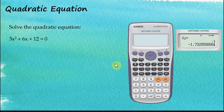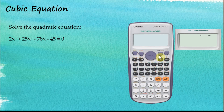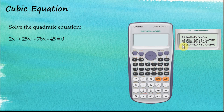Now let's solve a cubic equation using the calculator. The equation is 2x cubed plus 25x squared minus 78x minus 45 equals zero. Go to Mode, then Equation, and select number 4 for cubic equations. The calculator will ask for coefficients a, b, c, and d.